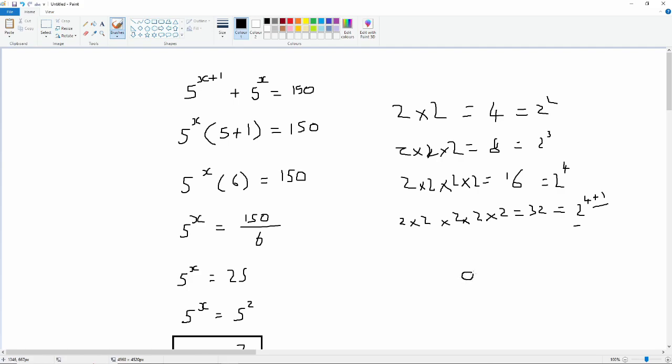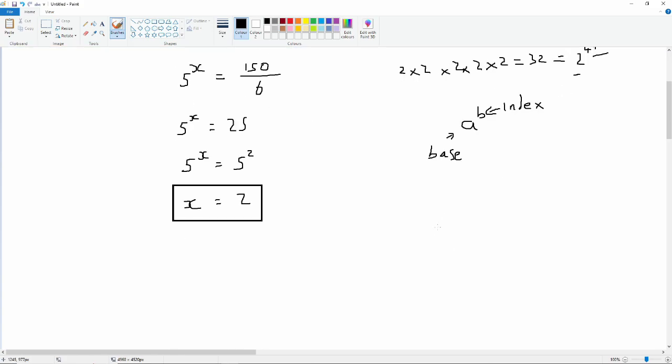So, multiplying by the base is the same as adding 1 to the index. If we have anything in the form of, say, a raised to the power of b, this is the base and this is the index. So, in general, a raised to the power of b multiplied by a is equal to a to the power of b plus 1.